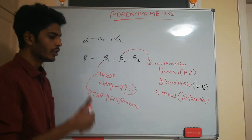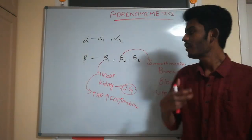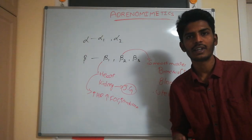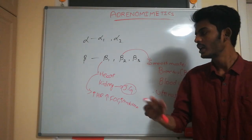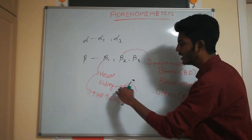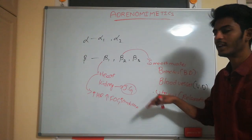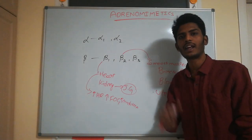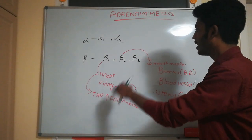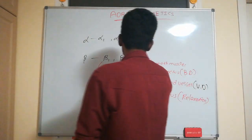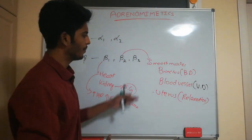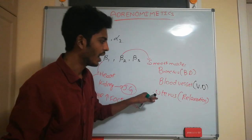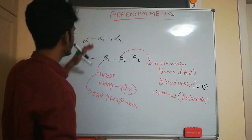To summarize: stimulating beta 1 increases heart rate, force of contraction, and conduction, which increases cardiac output and blood pressure. Kidney beta 1 stimulation also elevates blood pressure via the renin-angiotensin-aldosterone system. Stimulation of beta 2 receptors causes bronchodilation, vasodilation, and uterus relaxation.